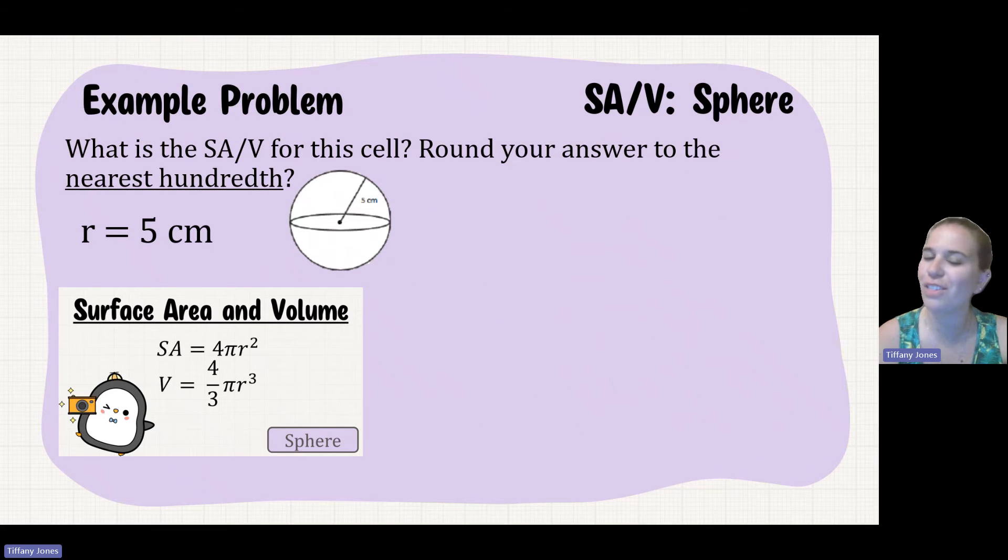Pause the video and see if you can solve this one yourself. What is the SA/V for this cell? Round your answer to the nearest hundredth. So just in case that image was a little too small, I did tell you that the radius was 5 on this image.